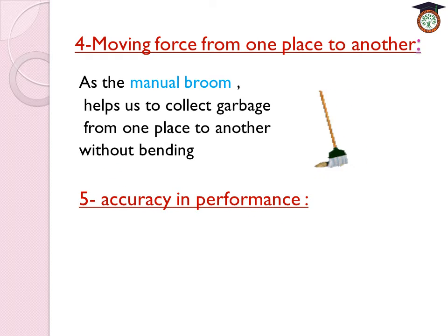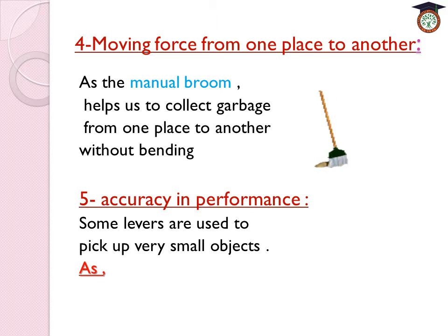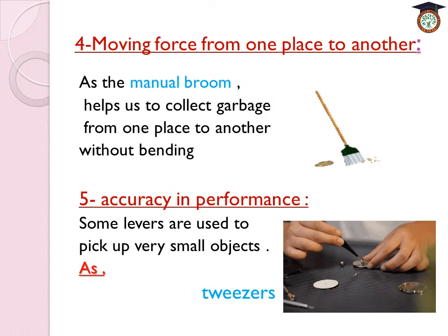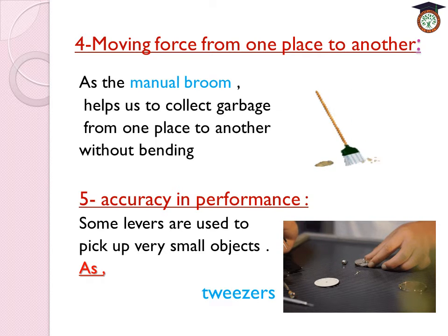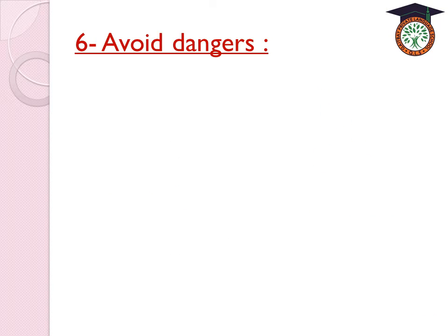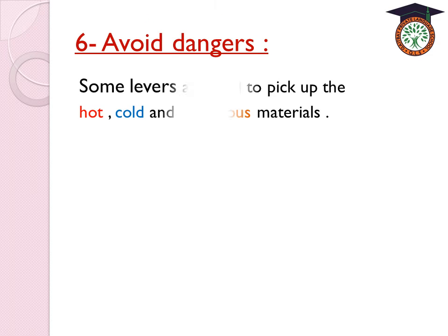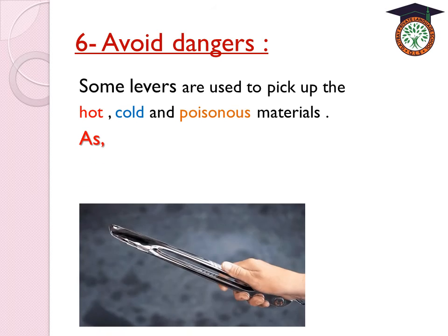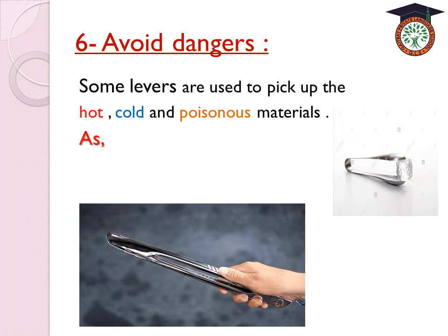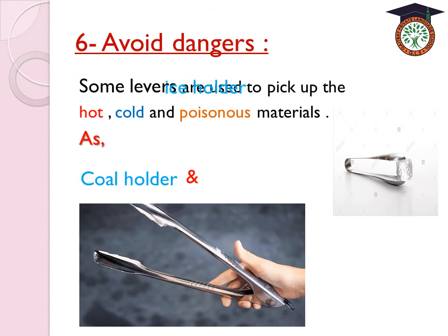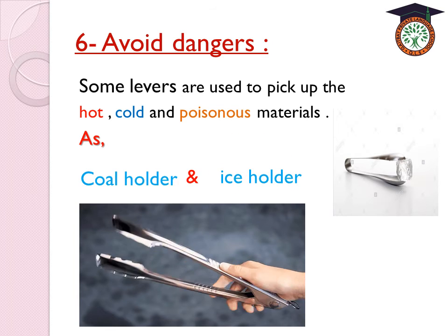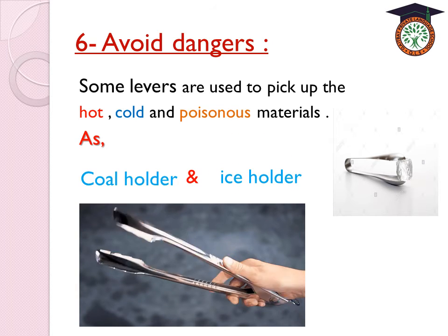Number 5 is accuracy in performance. Some levers are used to pick up very small objects, such as tweezers, which are used by doctors and watchmakers. The last importance is avoiding dangers — some levers are used to pick up hot, cold, or poisonous materials, such as the coal holder or ice holder, avoiding any dangers.